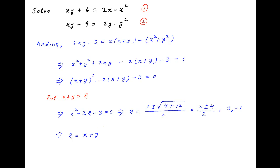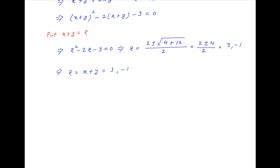Now z equals x plus y as assumed above, therefore x plus y can be equal to 3 or minus 1. Now take the first case where x plus y is equal to 3, and therefore y is equal to 3 minus x.